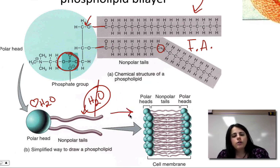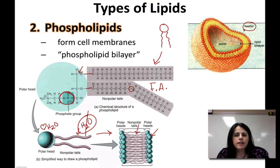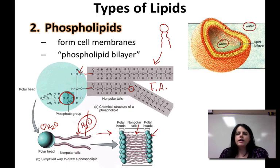So it actually forms something called a phospholipid bilayer — that means two layers of phospholipids. All the tails are on the inside because they hate water and there's no water in there. All the phosphate heads are on the outside because that's where the water is. The water is on the inside and the outside of a cell, and that's where the heads are pointing. The tails are pointing to the inside where there's no water. It makes a nice membrane to hold everything inside and keep the cell working how it should.